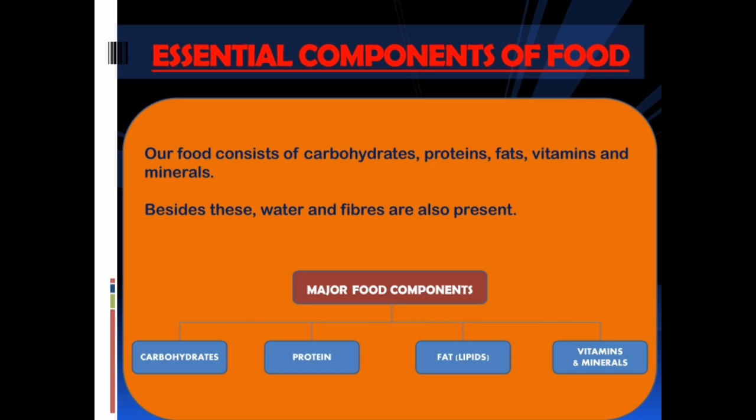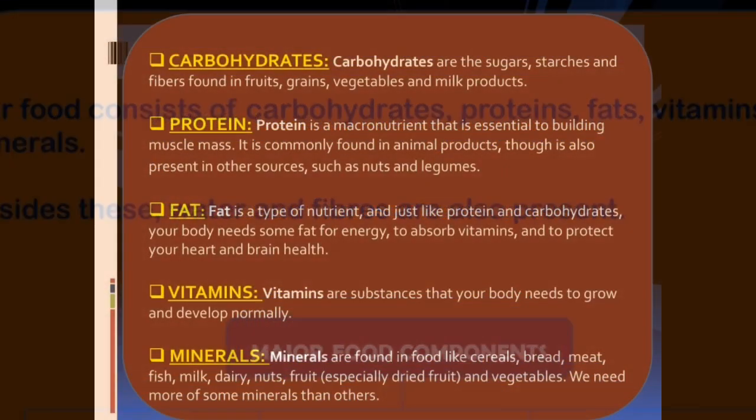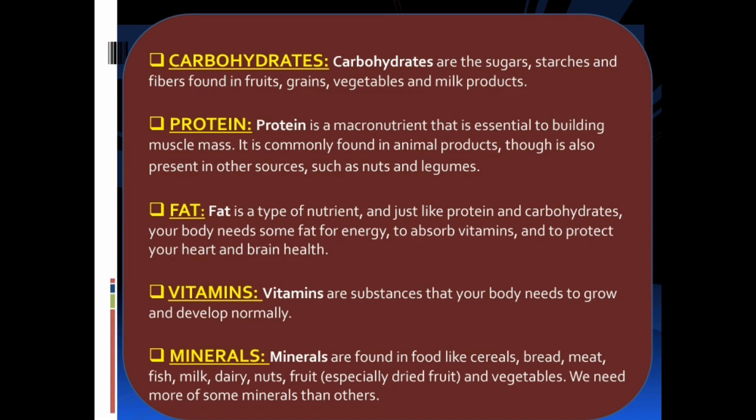Now we are going to discuss the essential components of food. Our food consists of carbohydrates, proteins, fats, vitamins, and minerals. Besides these, water and fibers are also present. Carbohydrates are the sugars, starches, and fibers found in fruits, grains, vegetables, and milk products. Protein is a macronutrient essential to building muscle mass, commonly found in animal products, nuts, and legumes. Fat is a nutrient — like protein and carbohydrates, your body needs some fat for energy, to absorb vitamins, and to protect your heart and brain health.